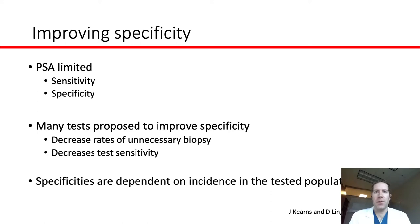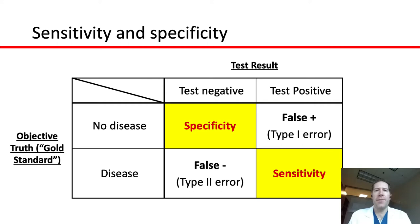It's important to note that specificities are dependent upon the incidence in a population, and we won't go into things like positive predictive value or negative predictive value. But if you remember from medical school, those numbers will change based on how common a disease is in a population being tested. So before we dive into how biomarkers are evaluated, I want to begin with a summary of sensitivity and specificity.